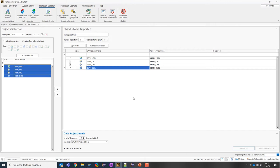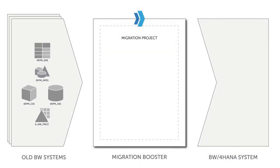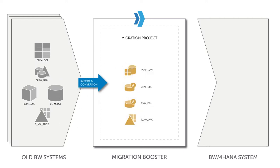The tool now uses function modules to search for the definitions of the old objects in the old system, translates them, and imports them into the migration booster project with the new object types. At this step, we are only importing into the application — we are not touching the BW4HANA system yet. Everything is still happening between the old system and the migration booster.